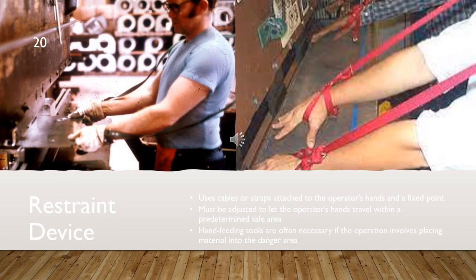In this part, we will discuss the restraint device. The restraint, or holdback, device utilizes cables or straps that are attached to the operator's hands and a fixed point. The cables or straps must be adjusted to let the operator's hands travel within a predetermined safe area. There is no extending or retracting action involved.